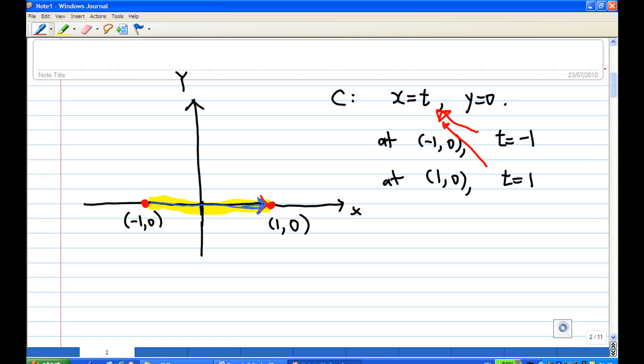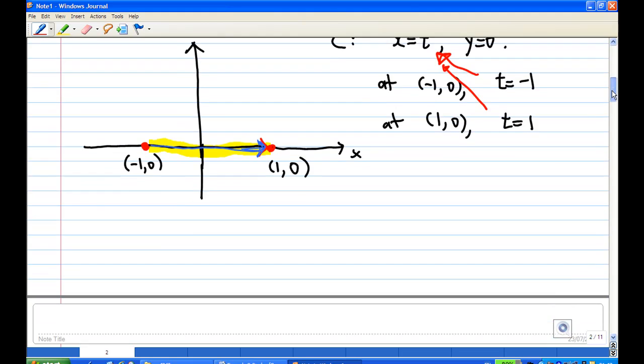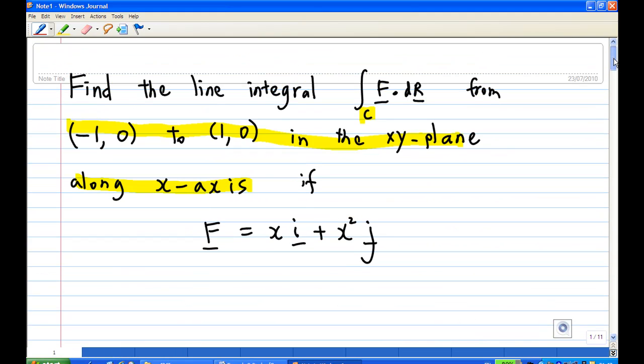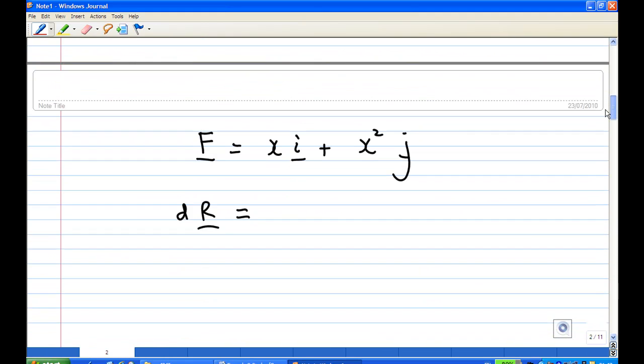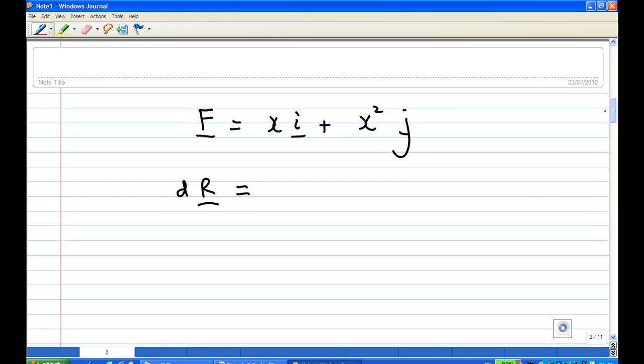Now let's work on the dot product. Our integral of the dot product f dot dr. So f is xi plus x squared j. Now dr here, in this case, there is no z-coordinate. Everything is on the xy-plane. So dr in this case is equal to just dx i plus dy j. There is no k now. There is no dz now.